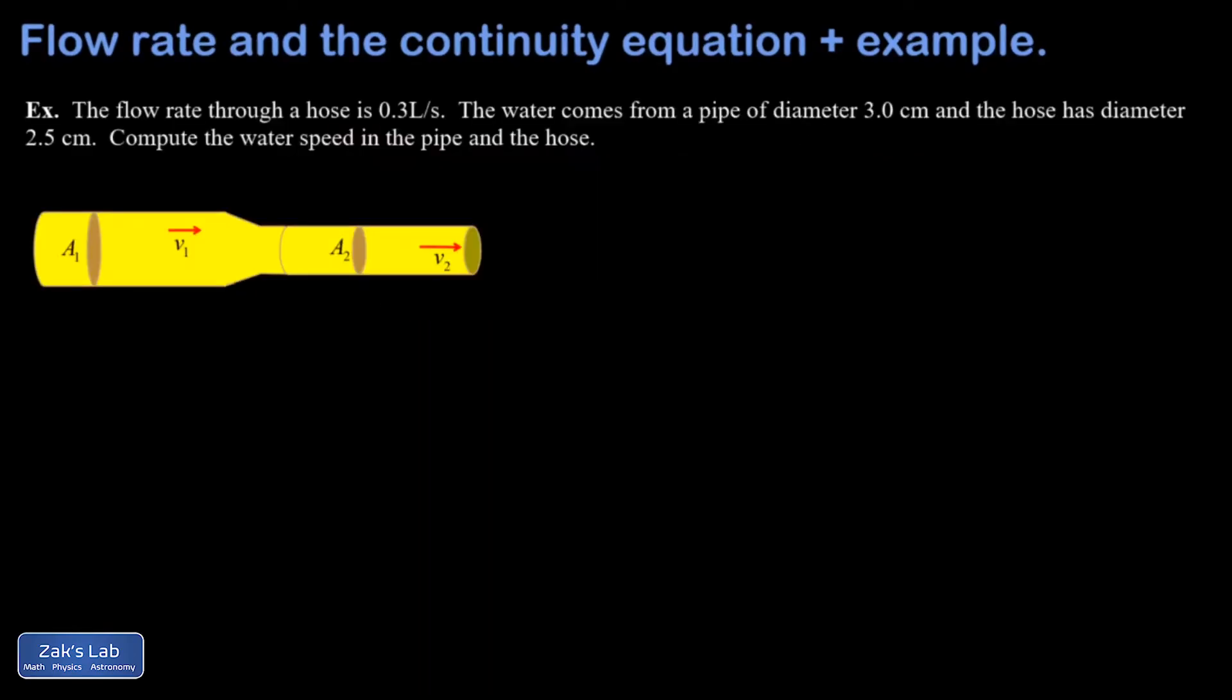Let's apply this to an example. So we have a flow rate through a hose of 0.3 liters per second. And the water is coming from a pipe of diameter 3 centimeters. But the hose has a diameter that's less than that. It's 2.5 centimeters. So I want to get the water speed in both parts.